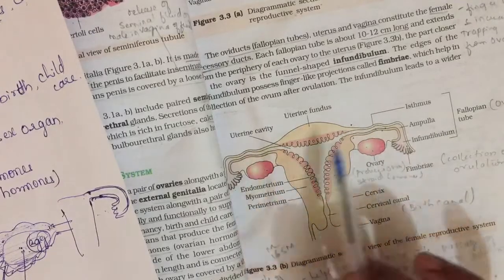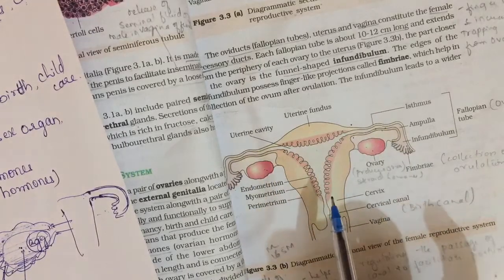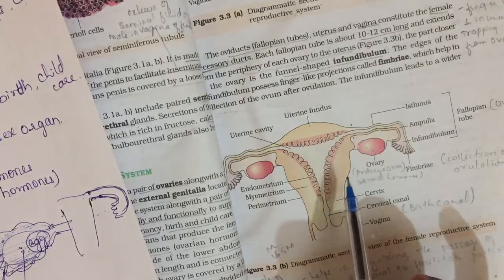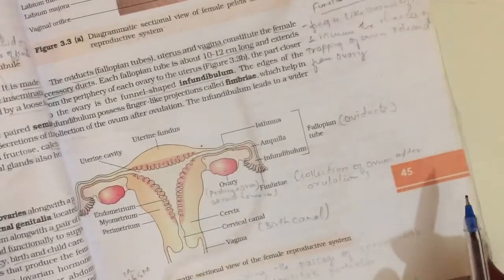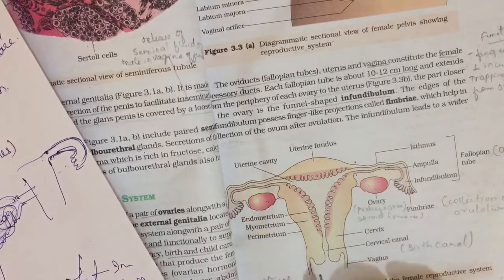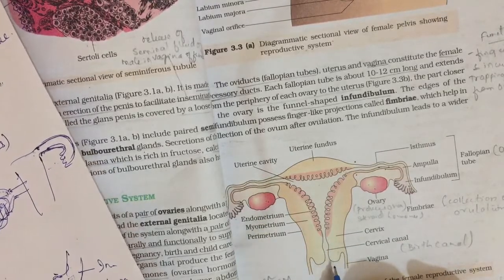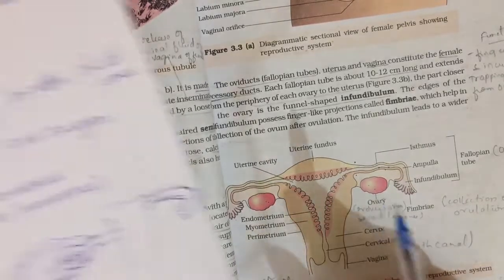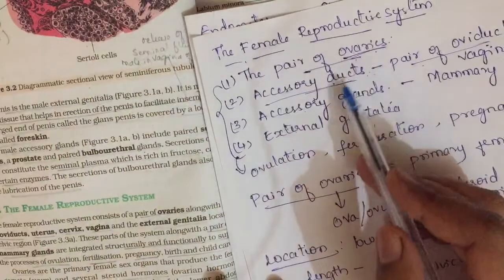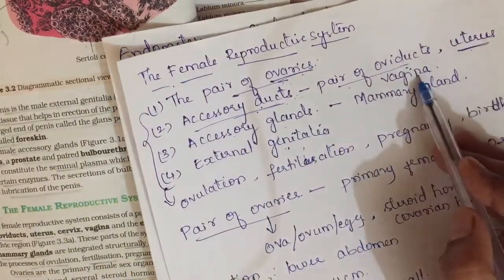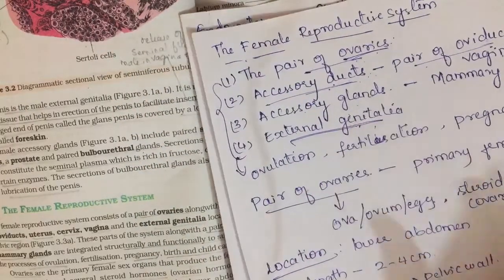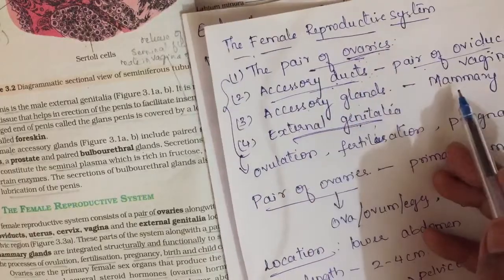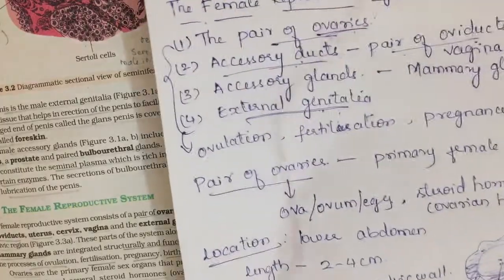This diagram of the female reproductive system is very important for exams — either to draw or to explain. In today's video we have discussed the pair of ovaries, accessory ducts including oviducts, uterus, cervix, and vagina. Now I shall discuss the external genitalia. The accessory gland — mammary gland — I will discuss in my next video.